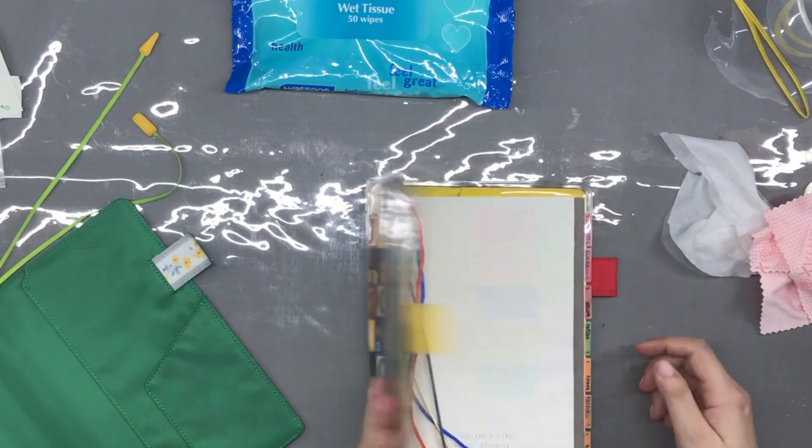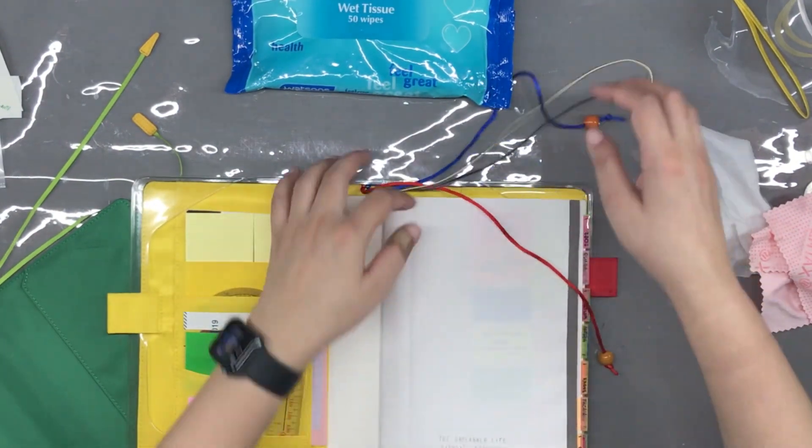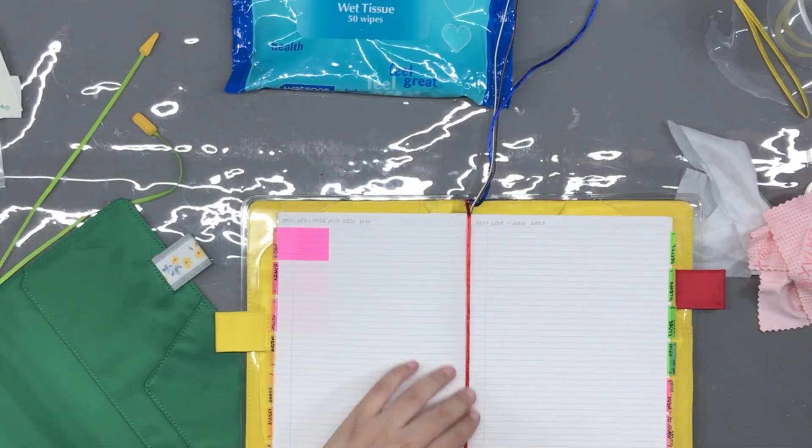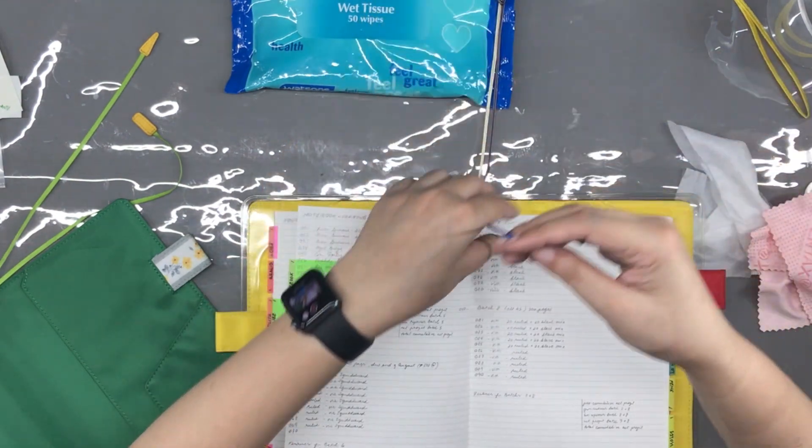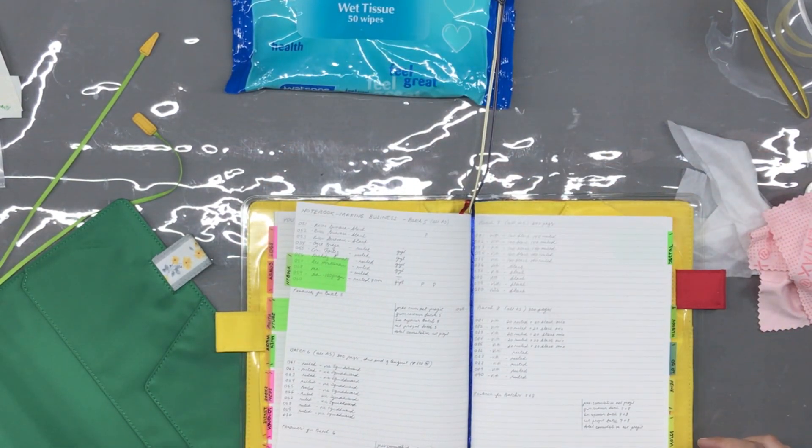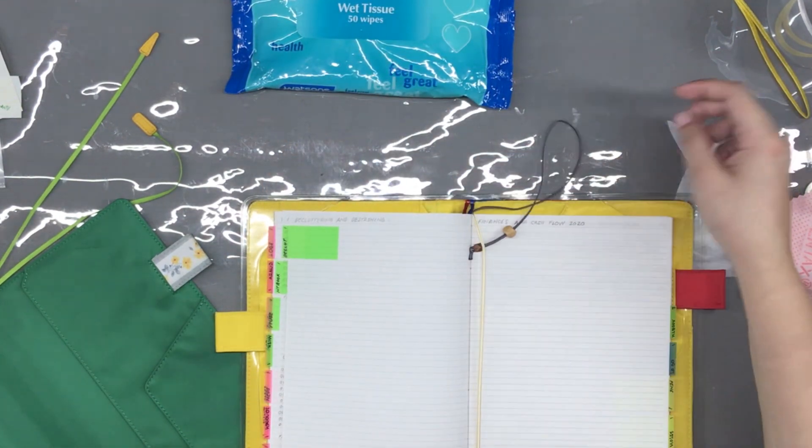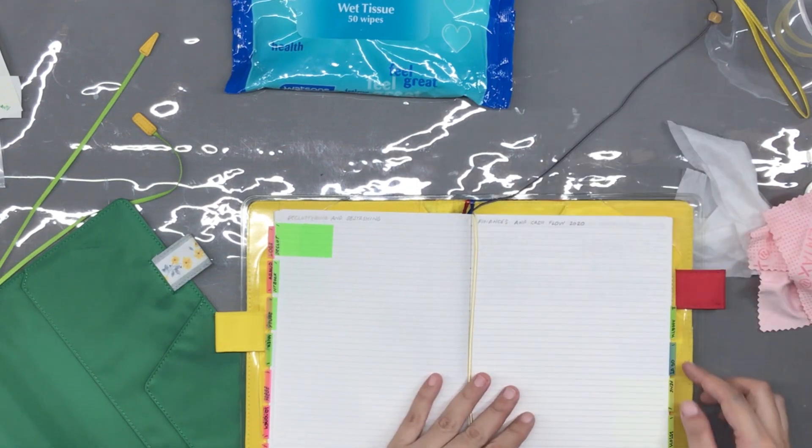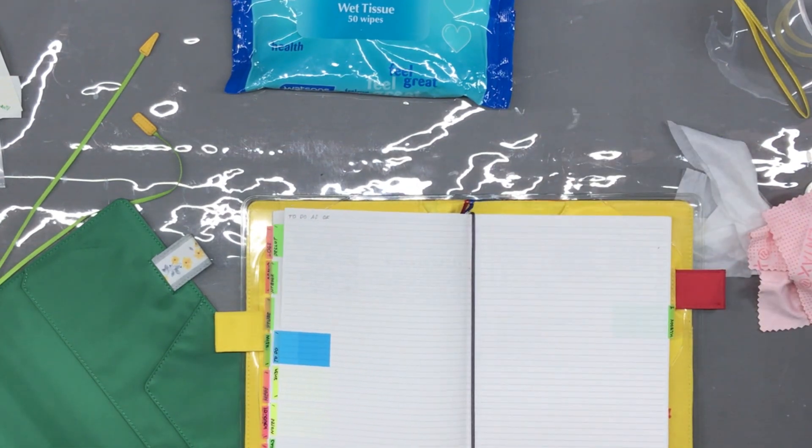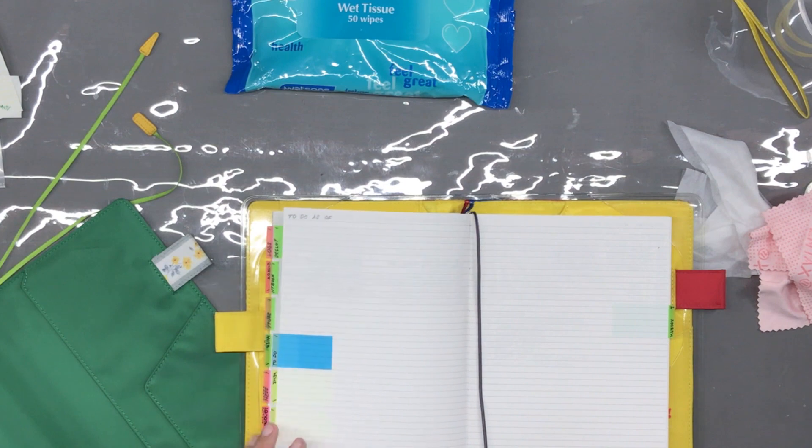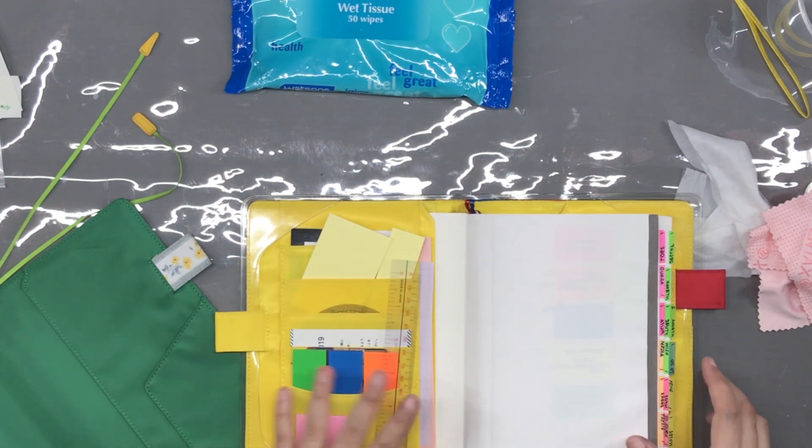Then I simply placed the ribbon markers on the pages where I need them to be. The Hobonichi cover already has two ribbon markers but I added two more ribbon page markers which you will see in the video that I made about preparing to move into this new notebook cover. It's linked down below.